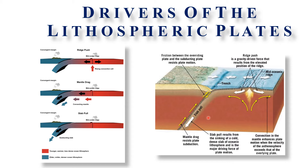Many of the details of this convective flow remain the topic of debate in the scientific community. In brief, the different forces which operate plate tectonics include ridge force, which occurs along the divergent plate margins, and slab pull, which occurs along the convergent plate margins. Gravity facilitates this movement.